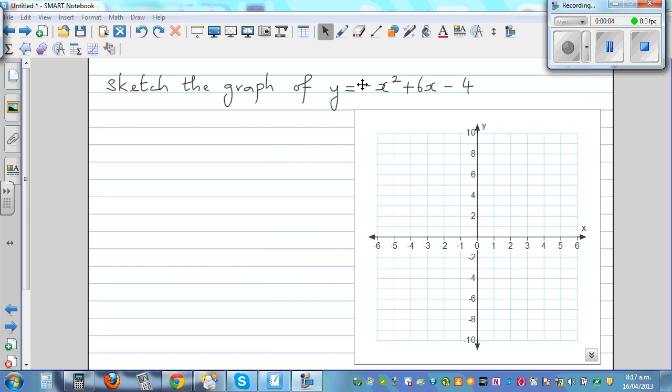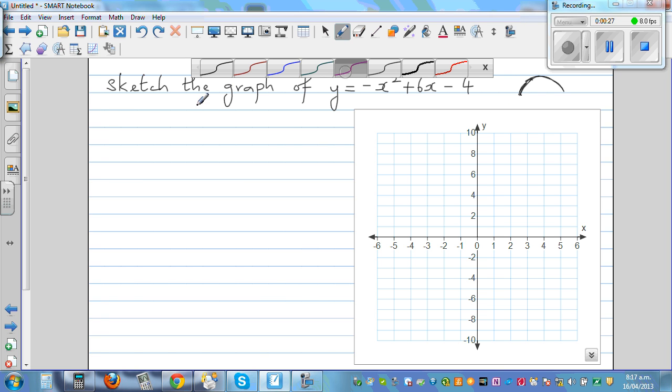Sketch the graph of y equals negative x squared plus 6x minus 4. So whenever you have a negative in front of x squared, you should understand the graph is going to be upside down. The graph is going to look umbrella shaped. This is the shape of the graph. We'll confirm this on the calculator. So let's first find the vertex.